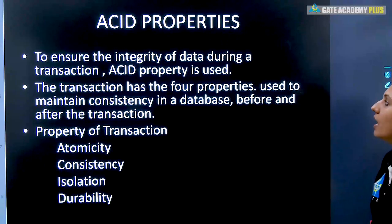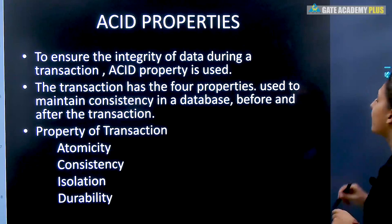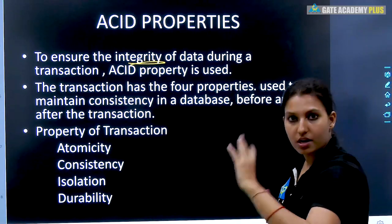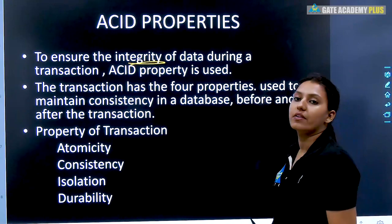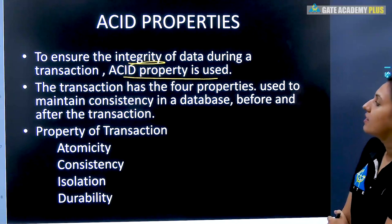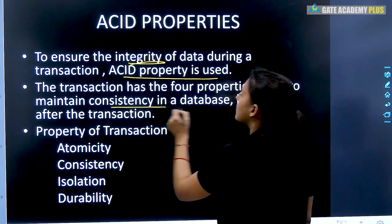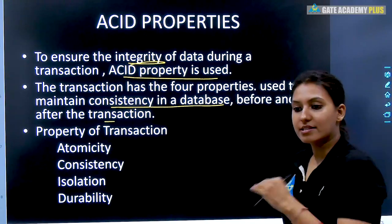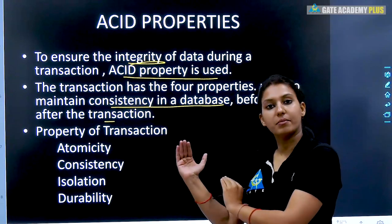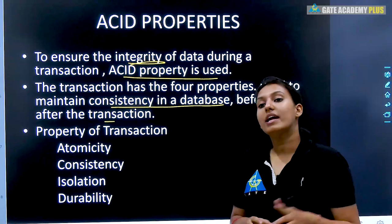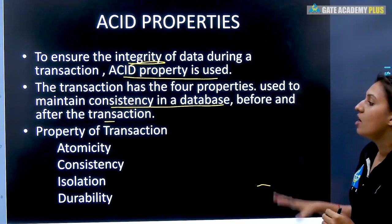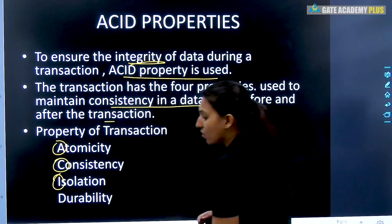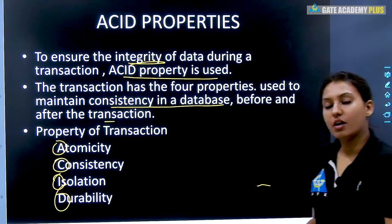To ensure the integrity of data during a transaction — for example, the amount that left one account should arrive in the other — integrity must be maintained. For this, we use ACID properties. The transaction has four properties to maintain consistency in a database before and after the transaction. The four ACID properties are: A for Atomicity, C for Consistency, I for Isolation, and D for Durability.